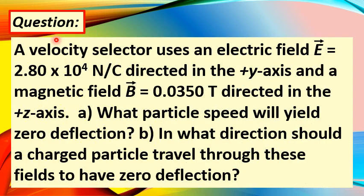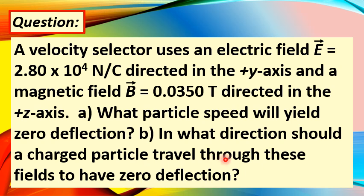The question: a velocity selector uses an electric field equal to 2.80 times 10 to the fourth power newton per coulomb directed in the positive y-axis, and a magnetic field equal to 0.0350 tesla directed in the positive z-axis. Question A: what particle speed will yield zero deflection? Question B: in what direction should a charged particle travel through these fields to have zero deflection?